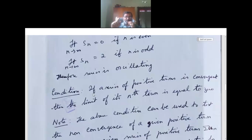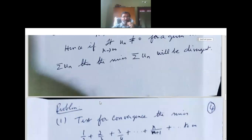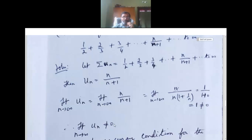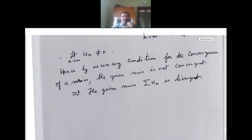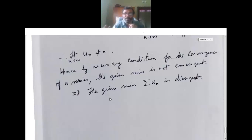If a series of positive terms is convergent, then the limit of its nth term is equal to zero. So if the limit of the nth term is zero the series is convergent, and if it is not equal to zero the series is divergent. We solved problems of this type in today's session.